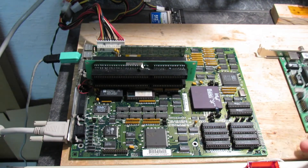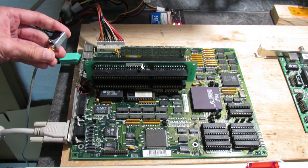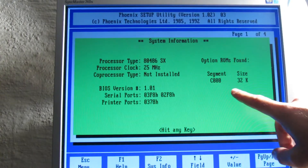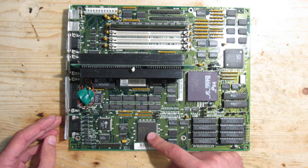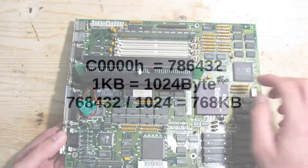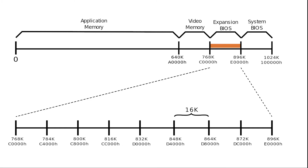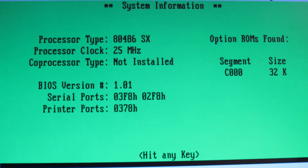Let me remove the network card again and boot into the mainboard BIOS. The interesting thing about this mainboard is that it shows which ROMs are available and at which addresses — this is not common to be shown in a BIOS, but for this showcase it's just perfect. This mainboard has an integrated video card with its own BIOS ROM located at C0000, which is 786,432 bytes decimal, or simply 768 K. Such ROMs can be between 8 and 64 K, and depending on their sizes, multiple ROMs can be squeezed into the given 128 K of address space. This mainboard shows there is a 32 K ROM located at address C000.